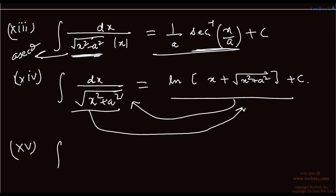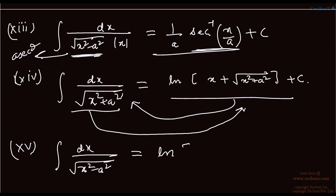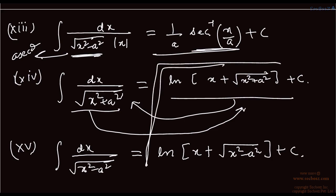The next formula: the integral of dx upon root of (x² − a²) equals ln|x + root of (x² − a²)| plus c. This is just the same form as x² + a², but with x² − a². Both are identical in structure.